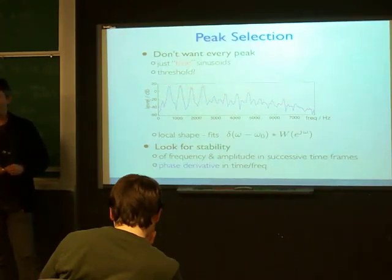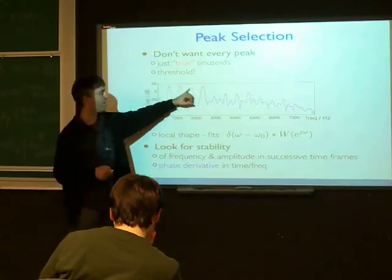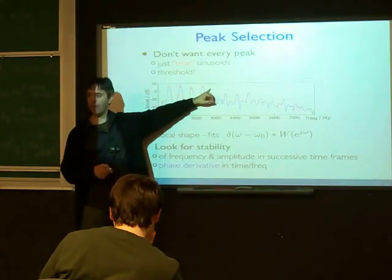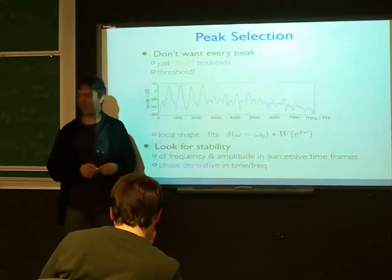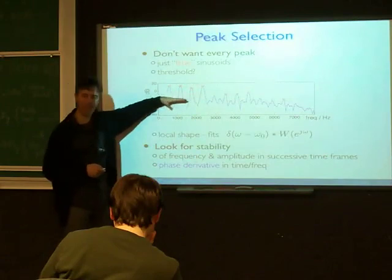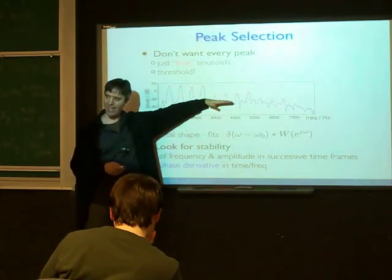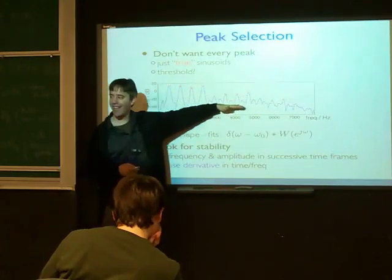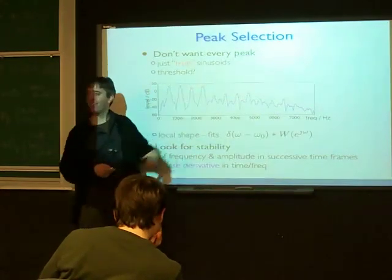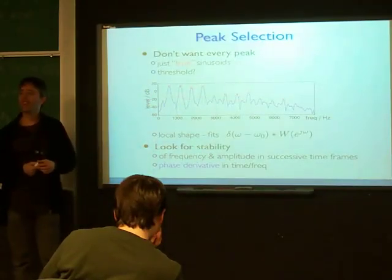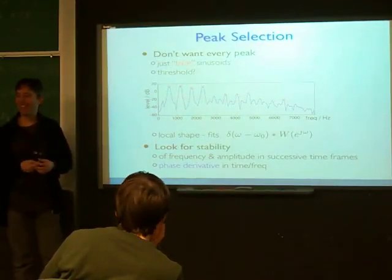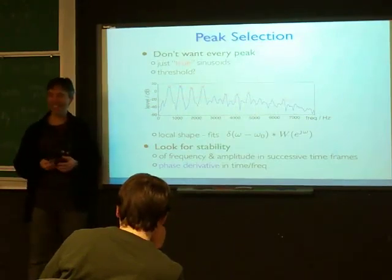Regarding the mini project, the peak-picking approach used there just took points that were larger than either of their neighbors, without doing the detailed parabolic interpolation to extract precise parameters from each peak, and used a flat amplitude threshold.